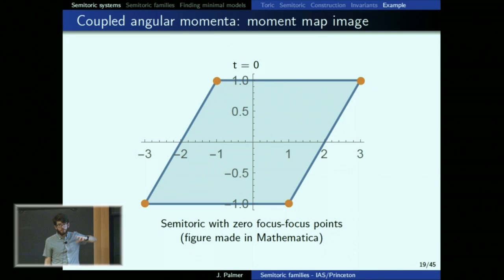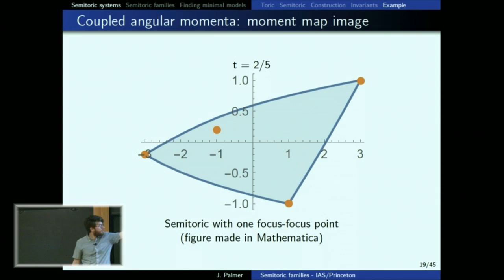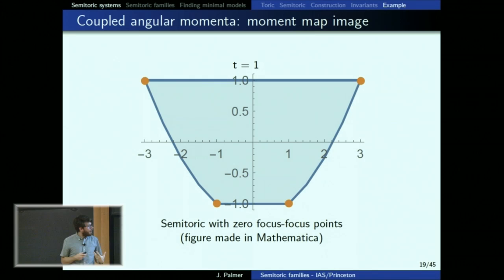So I have a fake animation showing the image of the momentum map. At t=0 it's the toric system. Increase t a bit and it deforms but still has zero focus-focus points. Increase t more and one of these points jumps off the edge — what used to be an elliptic-elliptic point is now interior with a pinched torus fiber. Then it runs across the momentum map until it crashes into the bottom. We have this one-parameter family of systems — a good example for semi-toric systems.